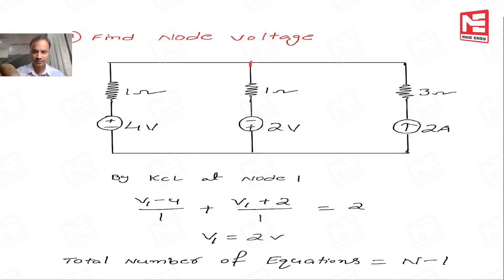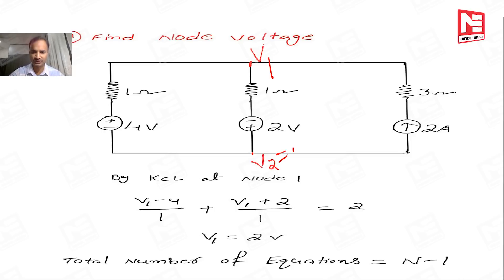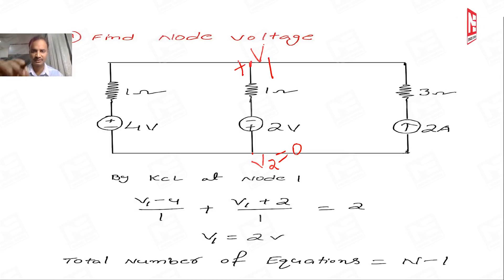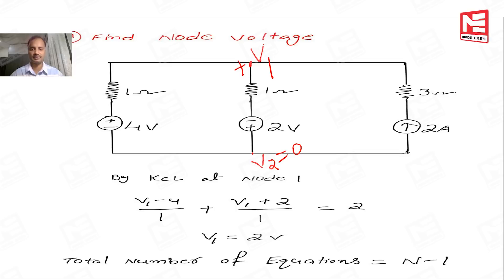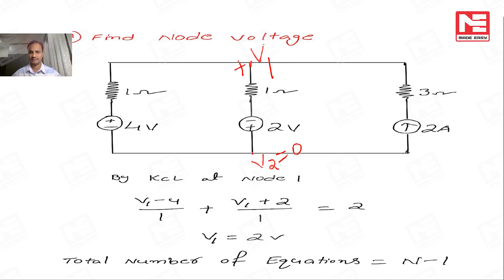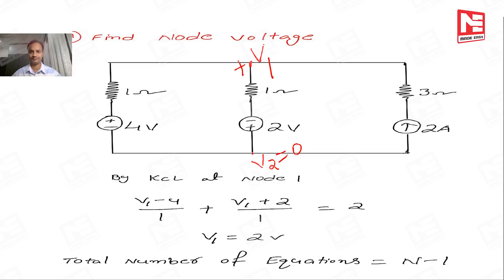This is one principal node, named V1. V2 potential equals zero. With respect to ground potential, the polarity at V1 is positive because V1 is at higher potential. In nodal analysis, while writing the KCL equation, the assumption is always that the node voltage is the greater voltage compared to all other voltages. That means every time you take V1 as the higher potential.